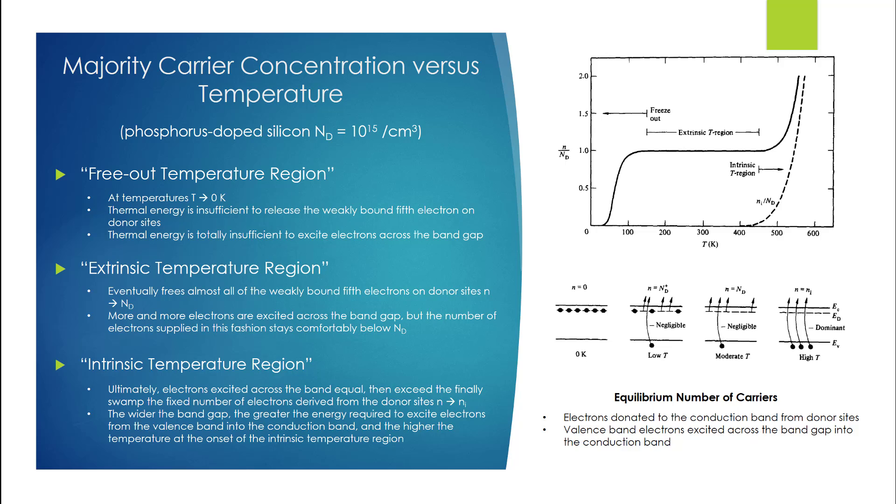In order to understand the concentration versus temperature dependence, we must know that the equilibrium number of carriers within the material is affected by two separate mechanisms. The first mechanism is electrons donated to the conduction band from donor sites. The second mechanism is valence band electrons excited across the band gap into the conduction band.